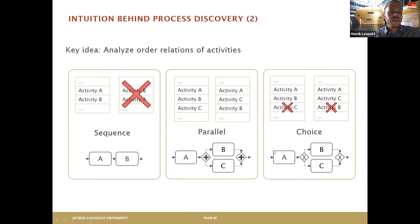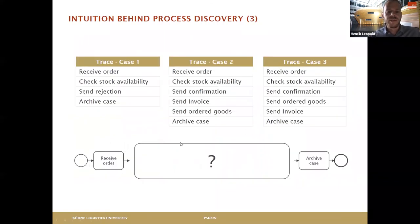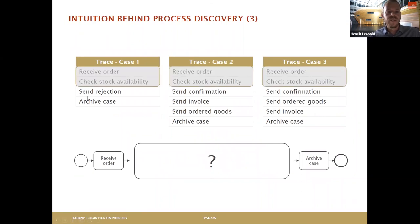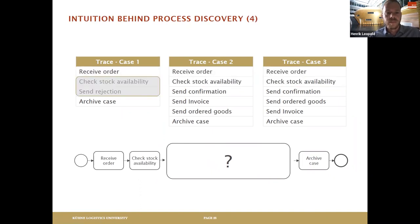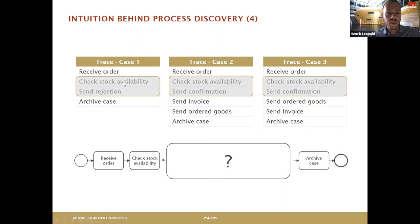If we apply these patterns to the example: receive order is always followed by check stock availability. Then we can see that check stock is sometimes followed by send rejection and sometimes by send confirmation — but never both — so here we have a choice or alternative.